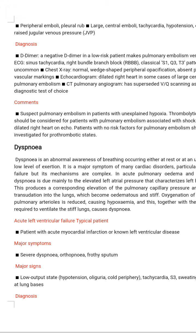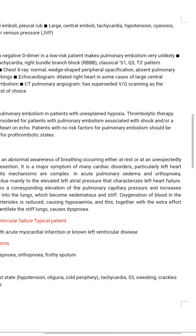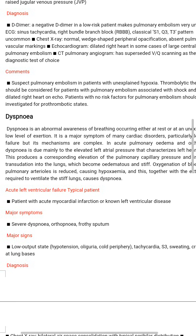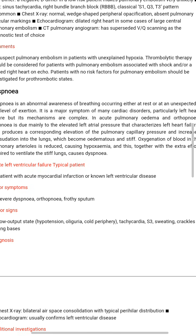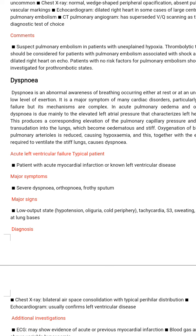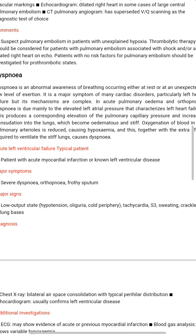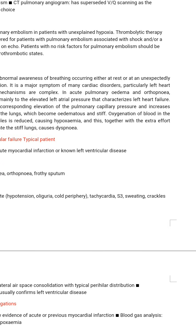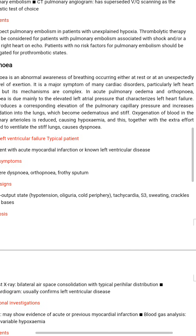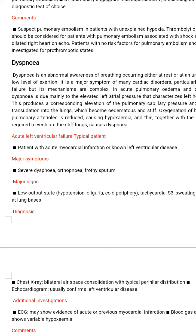Comment: suspect pulmonary embolism in any patient with unexplained hypoxia. Thrombolytic therapy should be considered for patients with pulmonary embolism associated with shock and/or a dilated right heart on echocardiogram. Patients with no risk factor for pulmonary embolism should be investigated for a prothrombotic state. Dyspnoea is an abnormal awareness of breathing occurring either at rest or at an unexpectedly low level of exertion. It is a major symptom of many cardiac disorders.